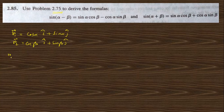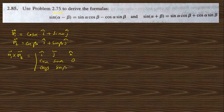We find r1 cross r2 using the determinant with i, j, k. The components are (cos α, sin α, 0) and (cos β, sin β, 0). Expanding: the i cap and j cap coefficients are zero, and only k cap is present. The result is k cap(cos α sin β − sin α cos β).